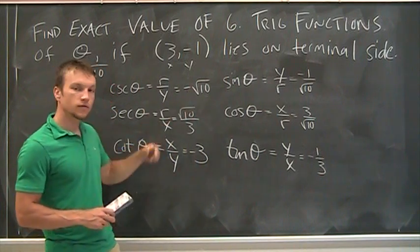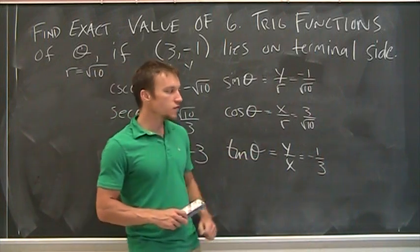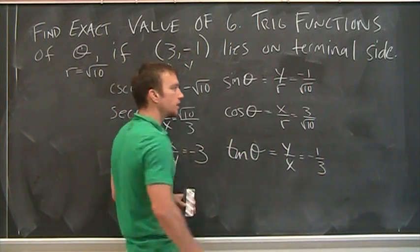So we're almost done. Cosecant, negative root 10, secant, root 10 over 3, cotangent, negative 3, tangent, negative 1 third. Now I just got to deal with those guys, right? We have to rationalize those denominators,